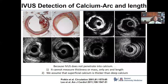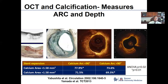IVUS, of course, is a much better way to detect calcium. It does an excellent job of detecting the arc as well as the length of calcium. However, because IVUS does not penetrate into calcium, it cannot measure the thickness or mass of calcium. On the other hand, OCT, because of its better resolution, can laterally measure the arc and the depth of calcium, with early data showing stent expansion is favorably impacted with less calcium in terms of both arc and calcium depth.